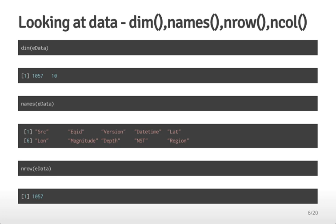Here are the very first commands you always run when you load a data set into R. First, look at the dimensions of the data frame using dim(edata) — in this case we see 1057 rows and 10 columns. One reason to always run this first is that if you know there should be eleven variables and you only see ten, or you expect ten thousand rows and only see a thousand, there was probably a problem reading the data into R.